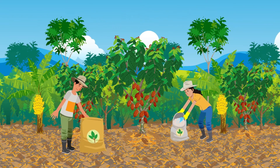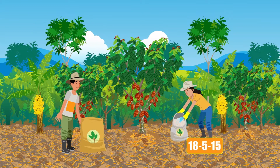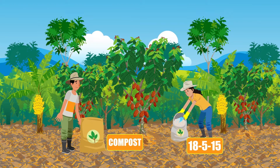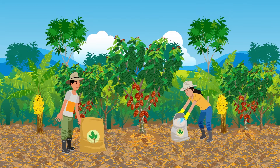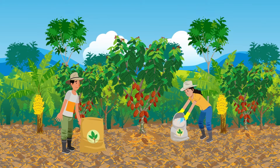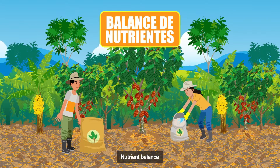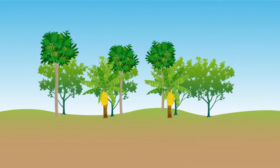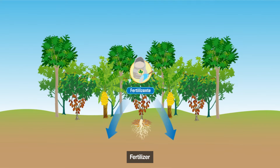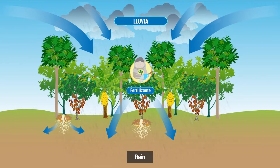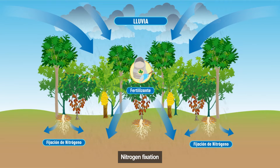When we talk about fertilization, we refer to the application of either chemical fertilizers or organic fertilizers. We must consider that each productive year, we must maintain a balance between the inputs and outputs of nutrients from the soil, what is known as nutrient balance. Nutrient inputs come through chemical fertilizers or organic manures, rainfall, and nitrogen fixation by leguminous trees.